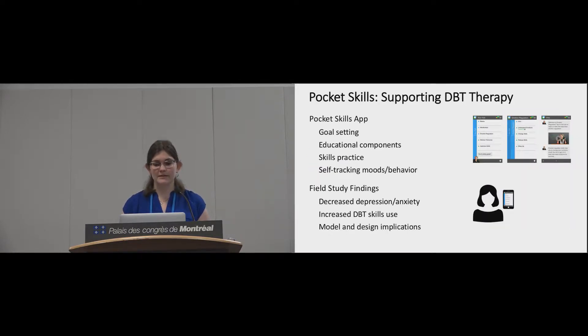We therefore developed PocketSkills, a multimedia mobile web app designed to offer holistic support of DBT, including goal setting, educational components, skill practice, and self-tracking of positive and negative moods and behaviors. We also contribute findings from a four-week field study with 73 people. After the study, participants reported decreased depression and anxiety and increased DBT skills use. Based on our qualitative analysis, we developed a model describing how PocketSkills supports DBT and present design implications based on these findings.